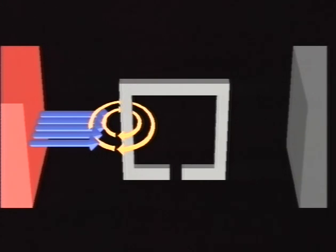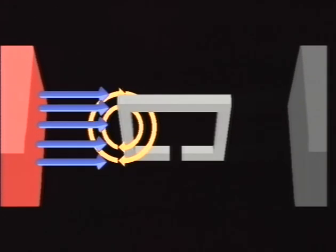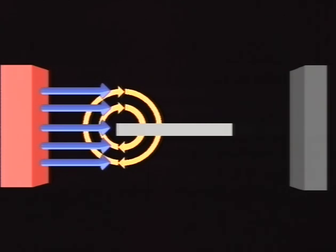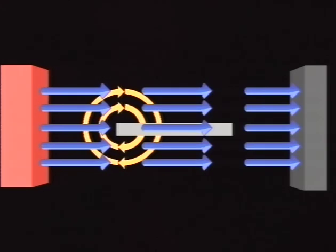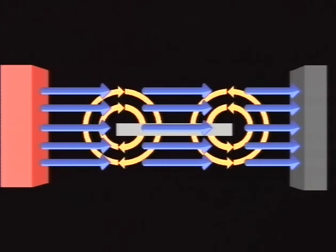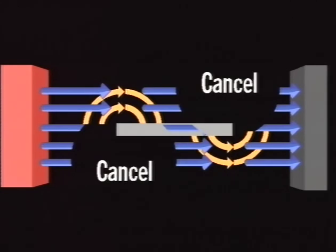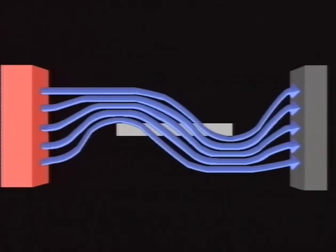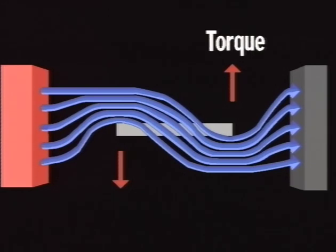If we look from the top, we can imagine the field lines. Around the wires are circular fields, and from the magnet are straight fields. On the other side of the coil, the direction of the circular fields is reversed. The fields interact — where they are opposed, they cancel each other out; where they are in the same direction, they reinforce. Again, if we imagine the lines as elastic, we can imagine the fields pushing the coil with a turning force called torque.